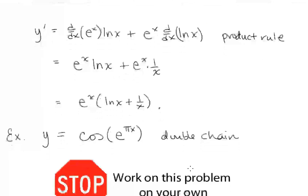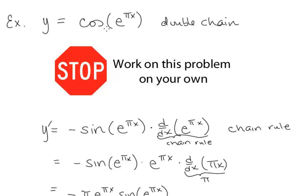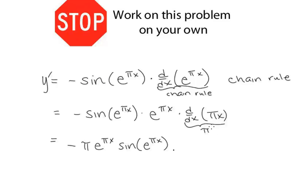Let's look at another example: y equals cosine of e to the pi x. This is a double chain rule. We start by taking the derivative of cosine evaluated at e to the pi x, giving negative sine of e to the pi x. Then we need the derivative of e to the pi x, which is another chain rule: e to the pi x times the derivative of pi x, which is pi. So our final answer is negative pi e to the pi x times sine of e to the pi x.